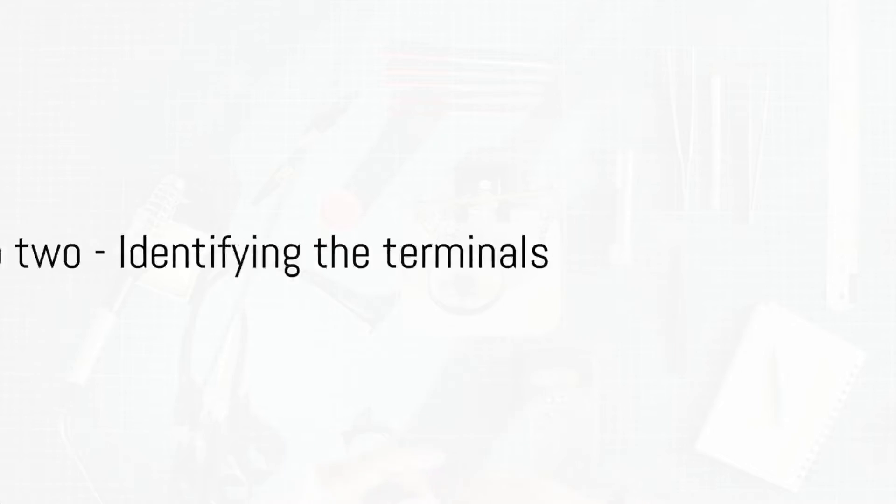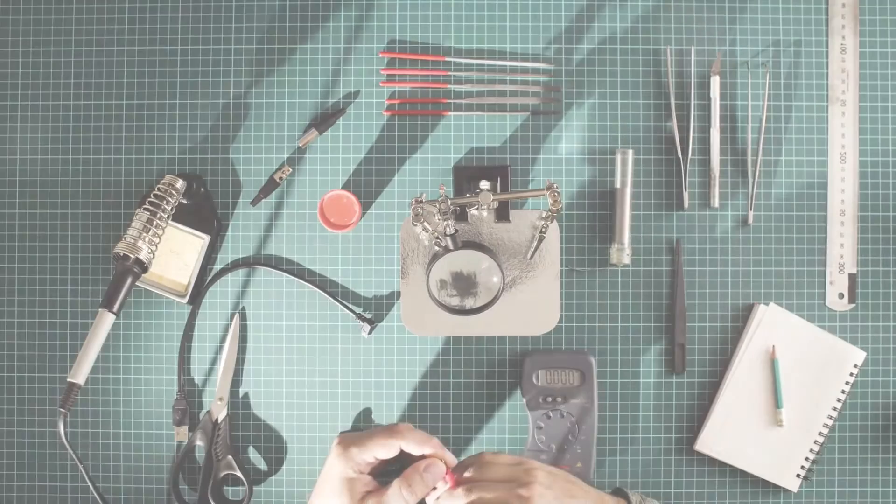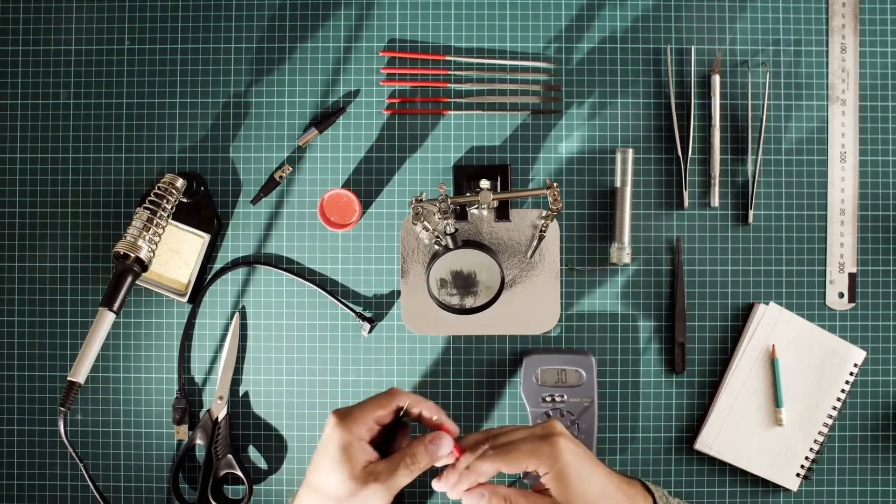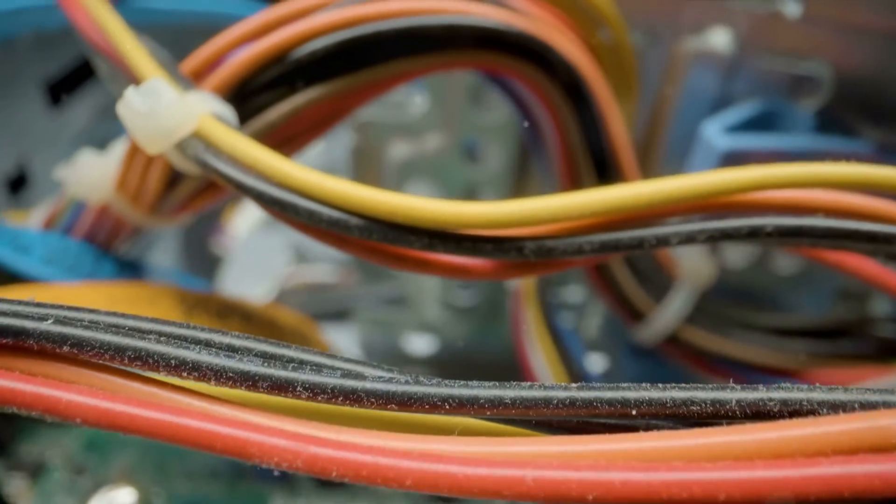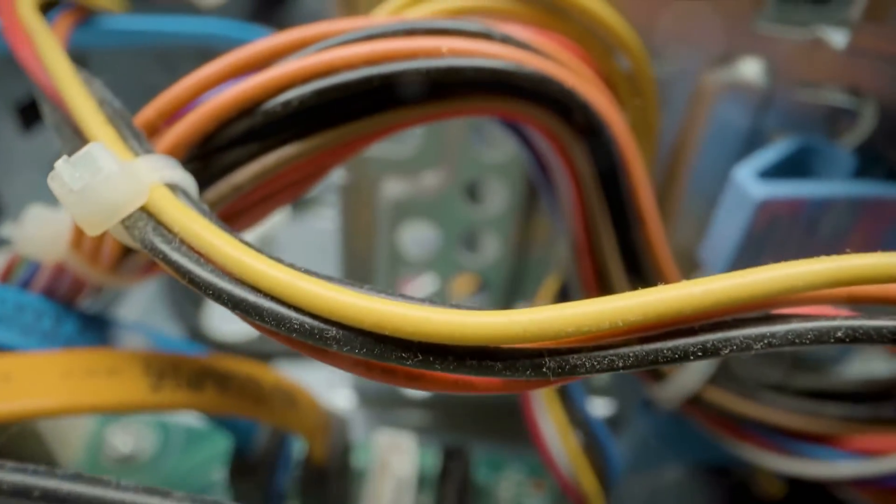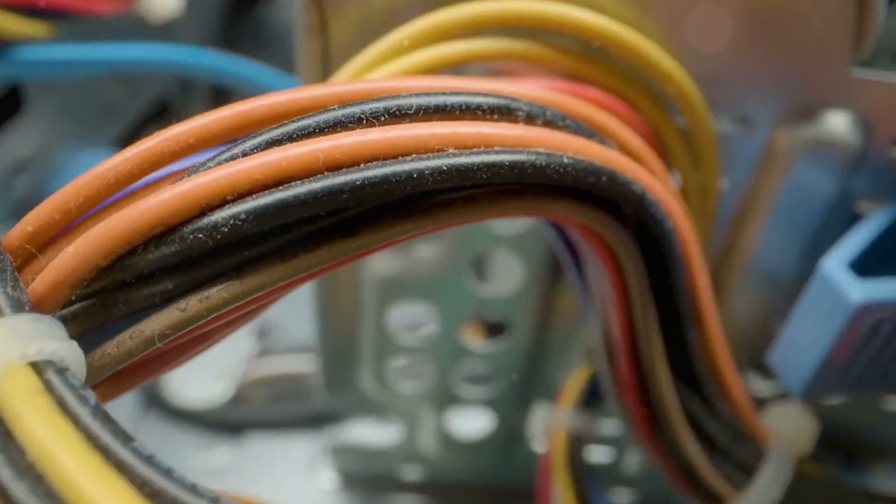Step 2: Identify the terminals of your load cell. Typically load cells boast four wires: red, black, green and white. The red and black wires cater to the power supply while the green and white wires serve to measure the output signal.